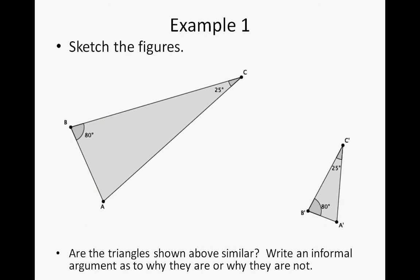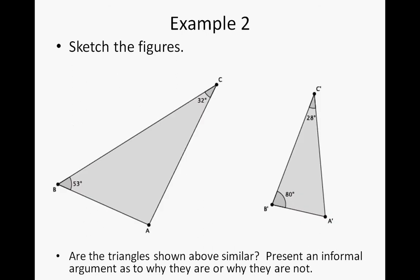Here's example one. Sketch these figures into your journal and make sure you label them accordingly because we have some angle measurements here. Are the triangles shown above similar? Write an informal argument as to why they are or why they are not. Sketch this out and then practice writing how do you know that these are similar. For the first example, we'll go ahead and just move on to the description so that you know what we're looking for. Actually, no, we're not.